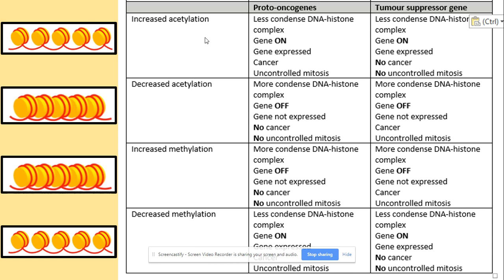Increased methylation has the same effect as decreased acetylation — the addition of the methyl group to DNA makes the complex more condensed, so the genes are off. Proto-oncogenes being off means no uncontrolled mitosis. But tumour suppressor genes being off means there is uncontrolled mitosis, so we are dealing with cancer. Decreased methylation has the same effect as increased acetylation — the removal of the methyl group from DNA makes the DNA and histones complex less condensed, turning both genes on. If proto-oncogenes are on, we have uncontrolled mitosis causing cancer. If the tumour suppressor gene is on, that is its normal job and it will not cause cancer.